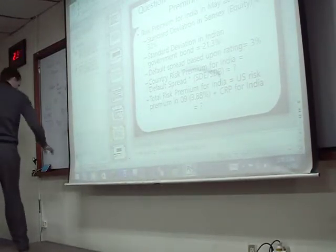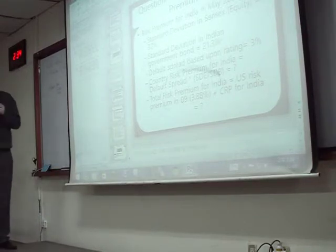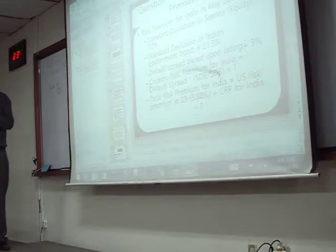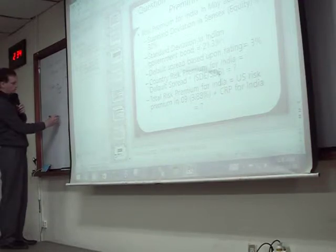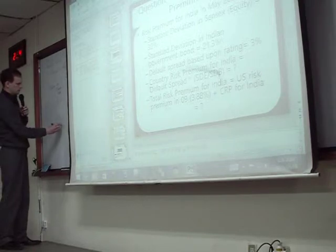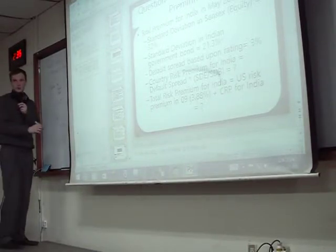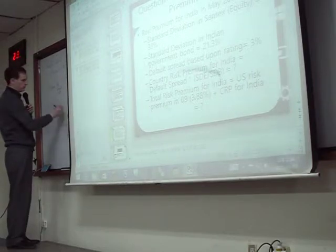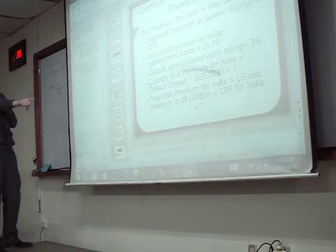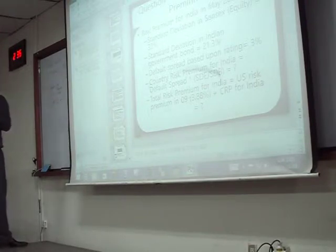Let's restart the class. What is the country risk premium for India? We had 32 divided by 21.3, which is around 1.5. So in India, stocks are about that much more variable than bonds. Then we multiply this by 3, we get 4.5. And then we add either 3.88 from 2009 or 4.2 from 2012. Then we find our risk premium for India.